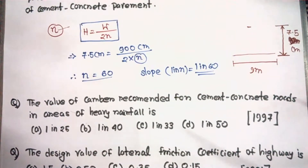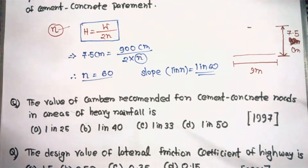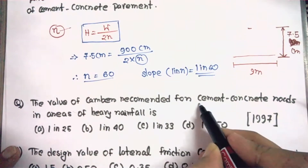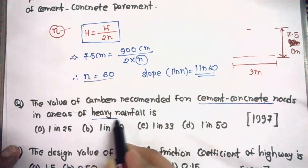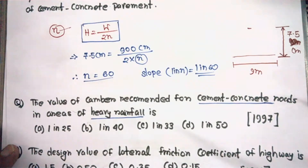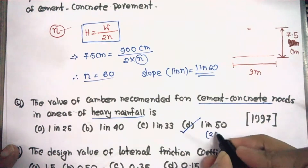Moving on to the next question: what is the value of camber recommended for cement concrete roads in areas of heavy rainfall? I have provided a chart for different types of roads and different conditions like heavy rainfall or light rainfall, where the camber value is different. For cement concrete roads in areas of heavy rainfall, from the chart the answer should be 1 in 50, or 2 percent.